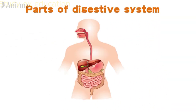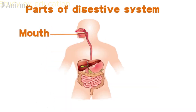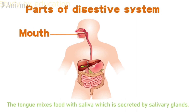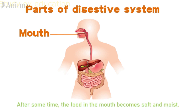Parts of the digestive system — the body parts that take place in the process of the digestion system are as follows. Number one is the mouth. The process of digestion begins from the mouth. Our teeth break the food into small pieces by cutting and grinding. The tongue mixes food with saliva, which is secreted by the salivary gland. The saliva starts the digestion of carbohydrates like sugar and starch. After some time, the food in the mouth becomes soft and moist, and the tongue pushes the food to the back of the mouth.